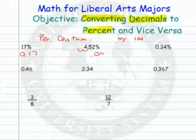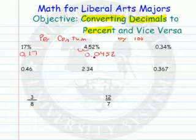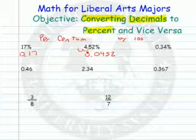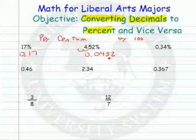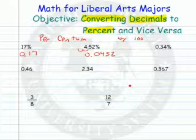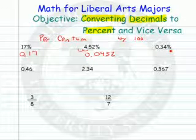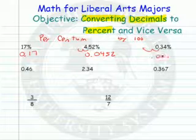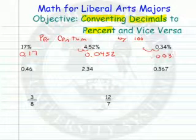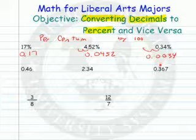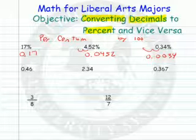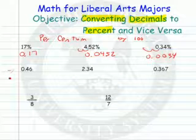So 4.52% moved two places to the left would be 0.00452 — four hundred fifty-two ten-thousandths. The next example: 0.34% — move it two places to the left — you get 0.0034, or thirty-four ten-thousandths. Now to change a decimal number to a percent, we move it two places to the right.